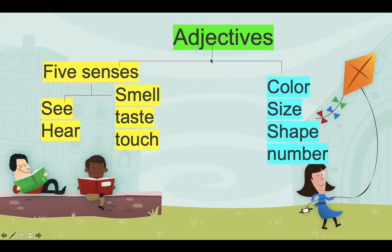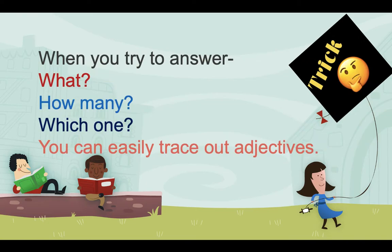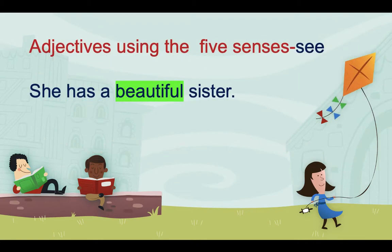Adjectives are broadly classified based on five senses, and also color, size, shape, and numbers. Let's have a look at each of these with examples. Here is a helpful hint: when you try to answer questions like 'what?', 'how many?', 'what kind?', or 'which one?', you end up with adjectives. You can easily trace out the adjectives in sentences when you try to answer these questions.